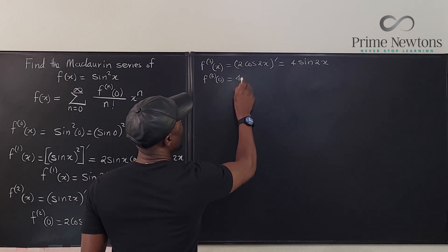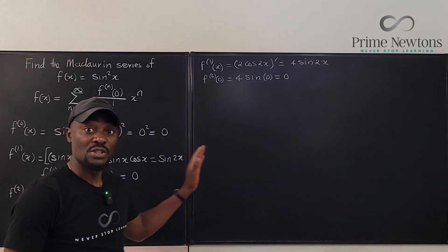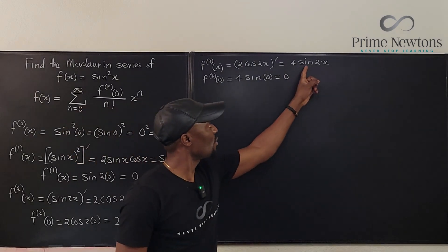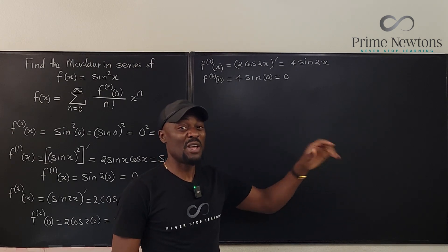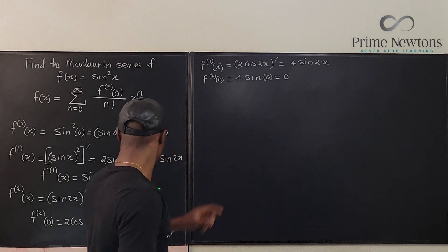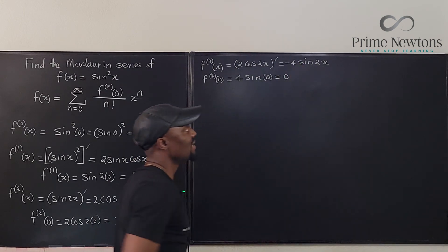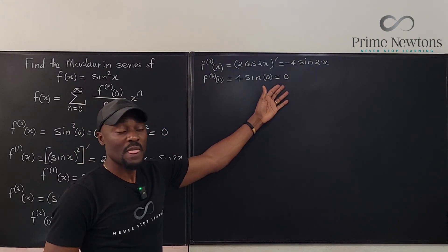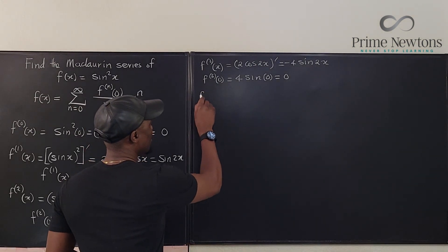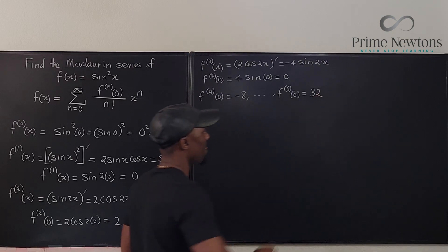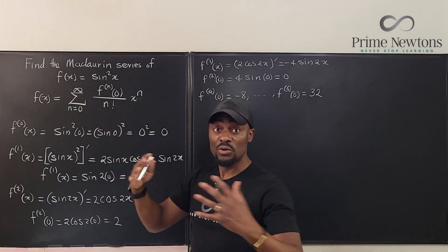The third derivative evaluated at zero gives 4 times sine 0, which equals zero. Continuing to differentiate, we get 8 cosine 2x for the fourth derivative — but wait, the derivative of cosine is minus sine, so this becomes negative. Evaluating gives zero again. Ultimately, continuing the pattern, the next non-zero coefficient we get is 32. Let me show you how to write the general formula.